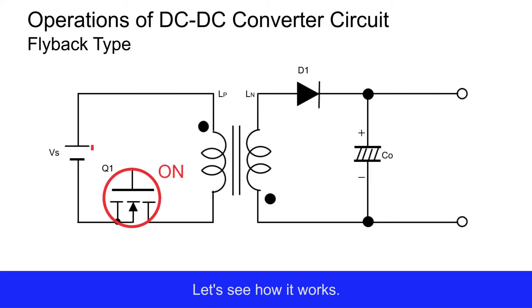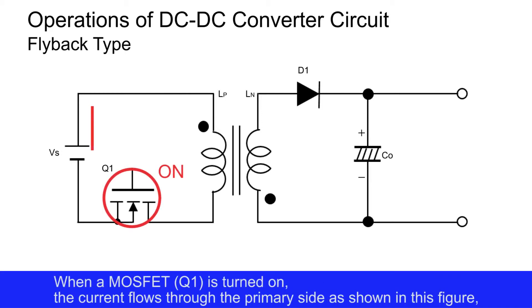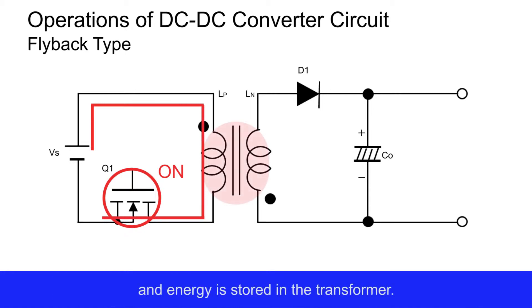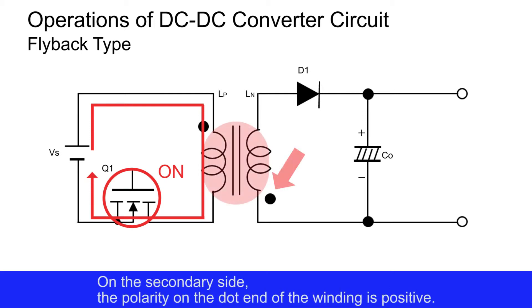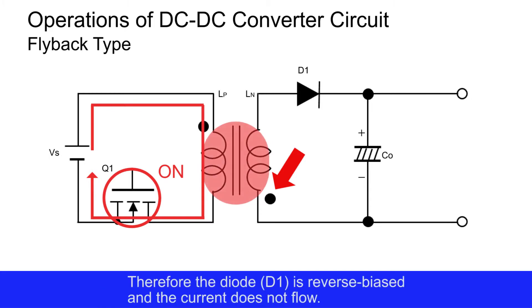Let's see how it works. When the MOS FET is turned on, the current flows through the primary side, as shown in this figure, and energy is stored in the transformer. On the secondary side, the polarity on the dot end of the winding is positive. Therefore, the diode is reverse biased and the current does not flow.